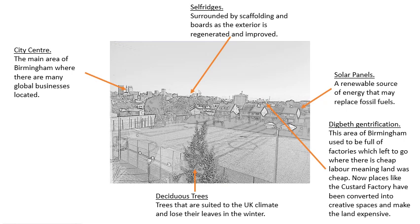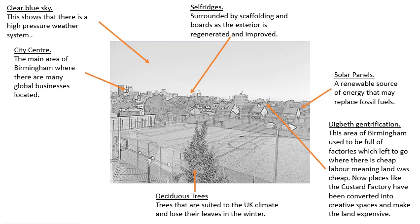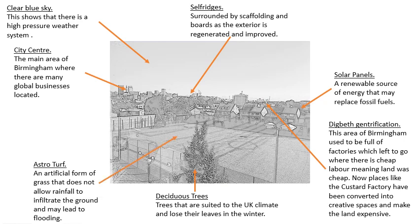In the foreground there's a tree, and a couple more visible behind the astroturf. These are deciduous trees, which are suited to the UK's climate — they lose their leaves in winter because of how cold it gets and have adapted to our conditions. On the photograph it's clear there are no clouds in the sky, which means we've got a high pressure weather system — something you'll learn about in year 7 — giving us nice clear weather with a bright sun and blue sky. The astroturf is also an example of geography: it's an artificial form of grass, so rainfall can't infiltrate the ground the same way it would with normal grass, meaning heavy rain could potentially cause a flood.